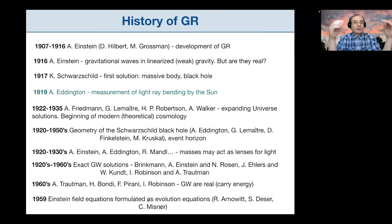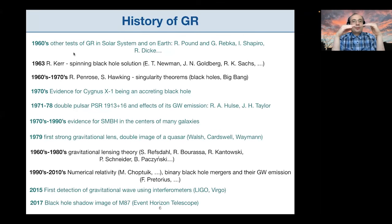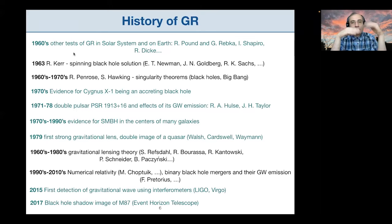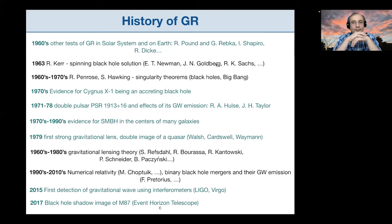In 1959, there was an important theoretical breakthrough: people managed to formulate Einstein's field equations governing spacetime geometry as evolution equations, which is not all that trivial. Starting from the 1960s, new tests of general relativity in the solar system started to emerge. Pound and Rebka managed to measure a very basic prediction of GR — the gravitational redshift and blueshift of photons, a frequency change of light simply because the light ray is falling in a gravitational field. Shapiro and Dicke also considered other tests of GR performed in the solar system.